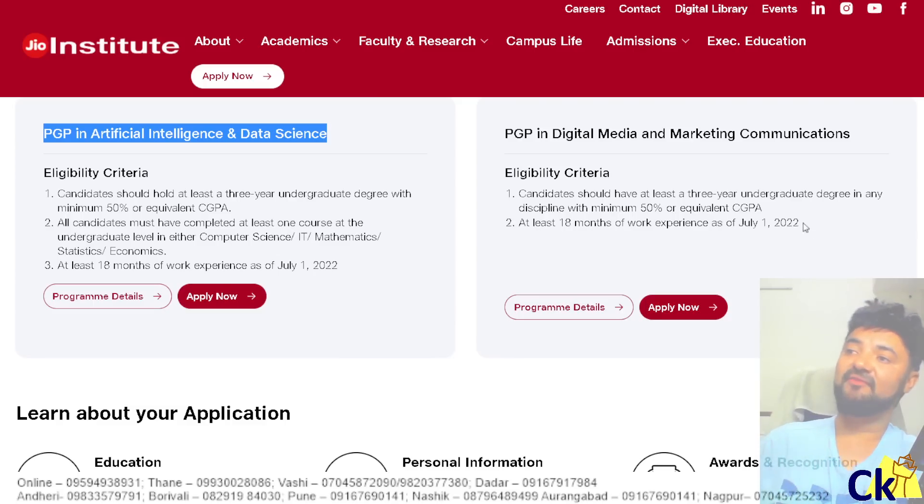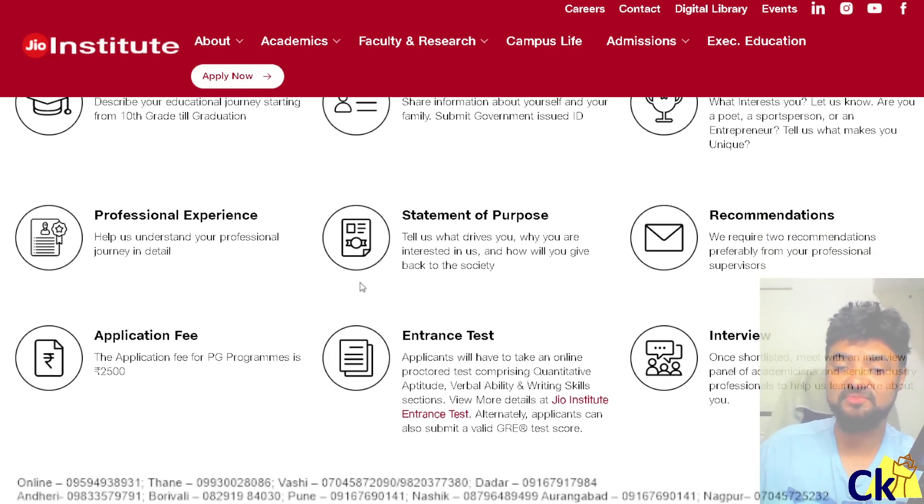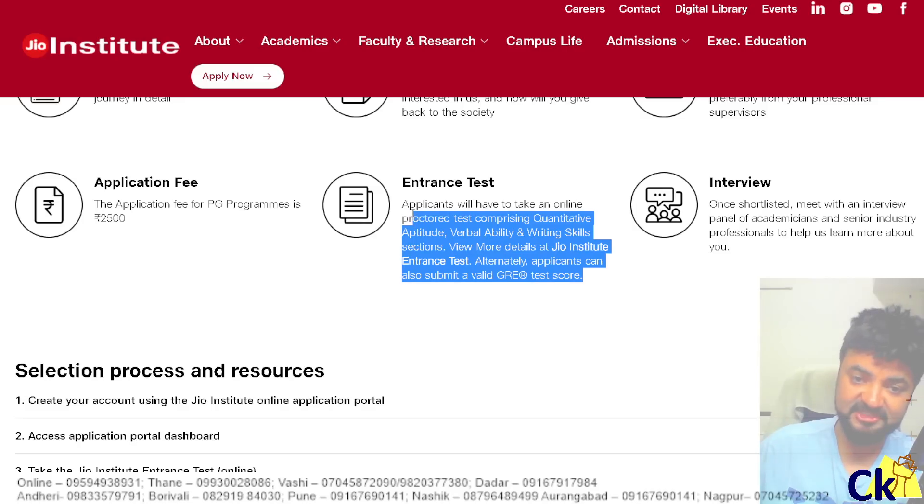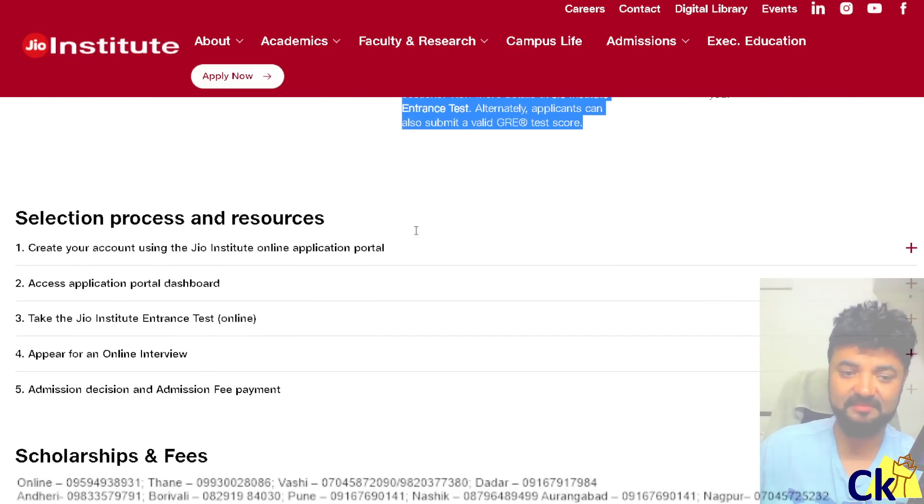Toh jis ke paas work experience hai, I would recommend. Main IIM chhod, kya na, make no sense. But new IIM chhod ke, baby IIM chhod ke, JIO institute join karna does make sense. Because they have very huge price, 6 lakh mein pura MBA ho raha yaar. Alternatively you can also submit your GRE score. Agar aapko GRE ke scores ke through jana, aap GRE score bhi apna de sakte ho.